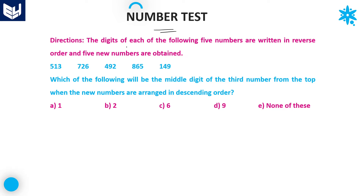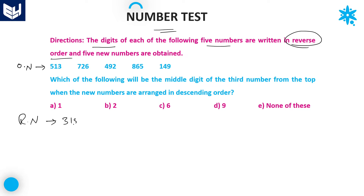The information given is: read the question carefully. The digits of each of the following numbers — these are the original numbers — are written in reverse order. Reverse order means you write the numbers in reverse. For example, 513 becomes 315. After that 627, then 294, then 568 becomes 941. These are the reversed numbers.